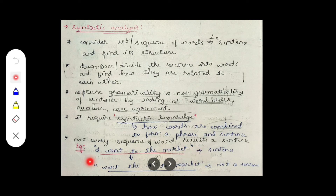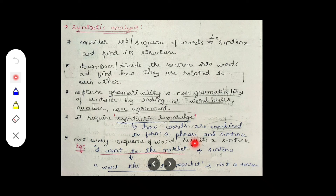Now consider the same words rearranged: 'went the I to market.' According to our definition, a sequence of words should be a sentence, but this is not the case — not all sequences of words form a sentence, because 'went the I to market' doesn't make sense. However, 'I went to the market' has order, agreement, and meaningful relationships between words — that is why we must check grammaticality and non-grammaticality.